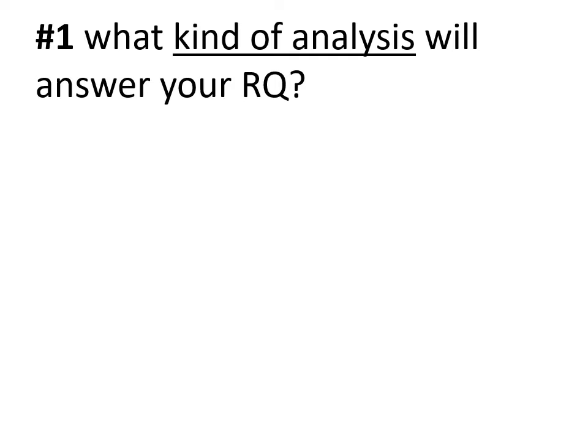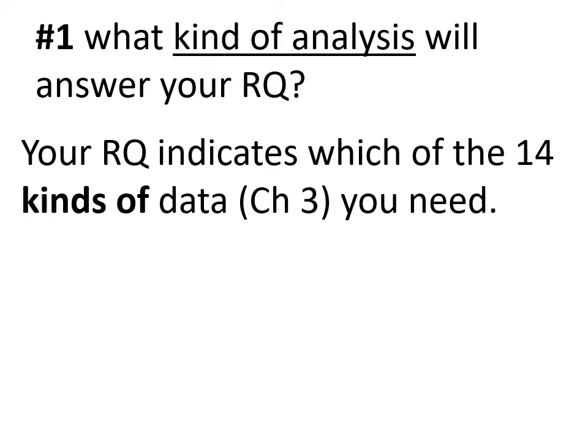Returning to the first of these three questions — what kind of analysis will answer your research question? If you've been making an honest effort to use Spickard's six steps, you've already worked through this to some degree. The research question you've developed, which he discusses in chapter one, should specify the kind of data you need. Sometimes he goes so far as to say it should be explicit about the kind of data you need, though that may not always be necessary, as long as you implicitly know the kind of data required.